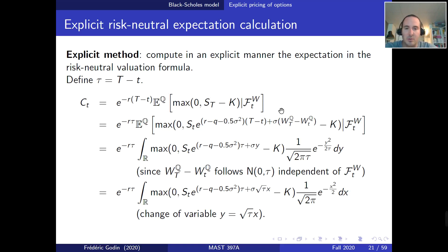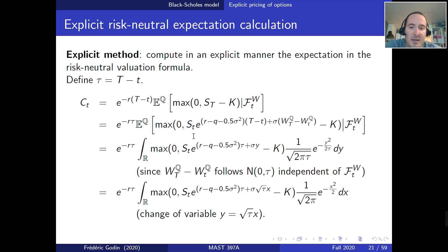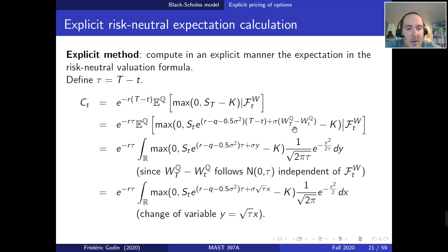How do we go from the risk-neutral evaluation formula to the next step? We express the stock value at time T from the underlying asset value at time t. We saw in the previous lecture that we can express the time T price as the time t price times the exponential of a deterministic term in the evolution of the stock price times (T minus t), plus the increment of the Brownian motion under the risk-neutral measure times sigma. If this step is not clear, I propose to stop the video and go back to the previous lecture for this chapter.